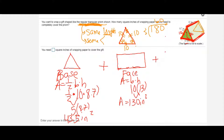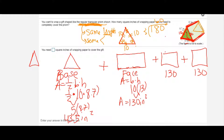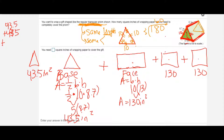I have three matching lateral faces, each with an area of 130 square inches. I also have a second triangular base with the exact same base and height as the first, so its area is also 43.5 square inches. In total I have five faces: three lateral rectangles and two triangular bases, so I need to add all of those areas together.